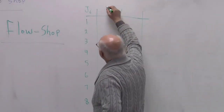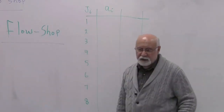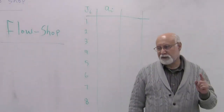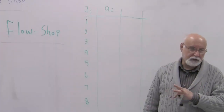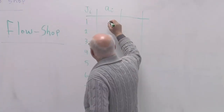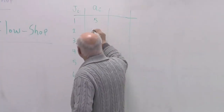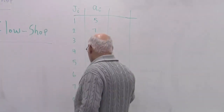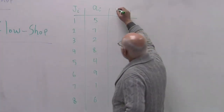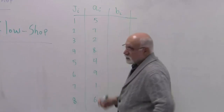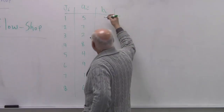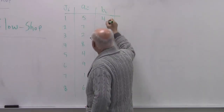We will use the terminology A-I to represent the processing time on the first machine — A, B, C, D, and so on. A-I is the processing time on the first machine, so let's put 5. B-I is used to represent the processing time on the second machine. Let's put some numbers in here.